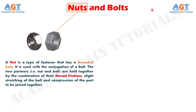A nut is a type of fastener that has a threaded hole. It is used with the conjugation of a bolt. The two partners, nut and bolt, are held together by the combination of their thread frictions, slight stretching of the bolt, and compression of the part to be joined together.